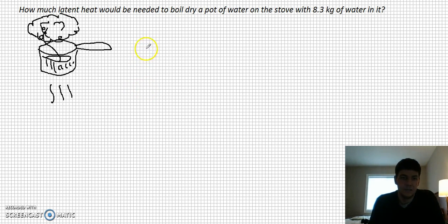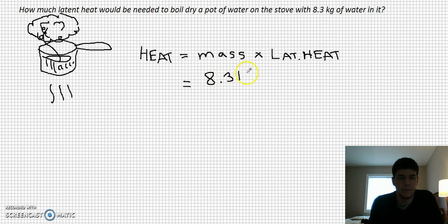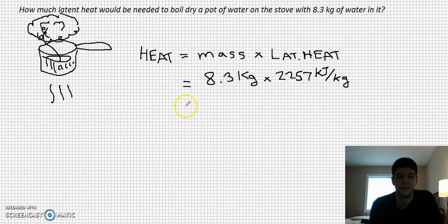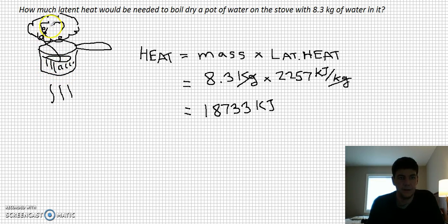The heat needed is equal to the mass times the latent heat. So for 8.3 kilograms of water: Q = 8.3 kg × 2,257 kJ/kg = 18,733 kilojoules. The kilograms cancel out, leaving us with kilojoules. This tells us exactly how much heat needs to be put into the pot in order for all that water to undergo a phase change.